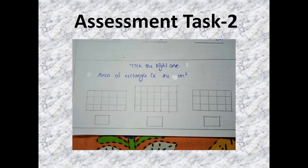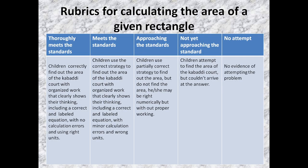And here is another task. So here, the area of the rectangle is given as 24 square centimeters. So the children need to tick the right rectangle. For this, they count the squares. And they can tick the right one.